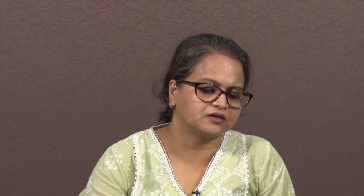There are various measures of price elasticity of demand: point price elasticity, arc price elasticity, cross price elasticity, and income elasticity of demand. Point price elasticity is given by the percentage change in quantity demanded divided by the percentage change in price, measuring elasticity at a point on the demand curve.